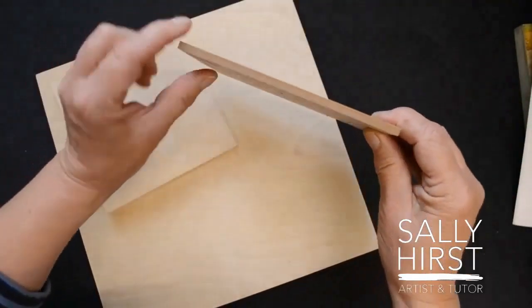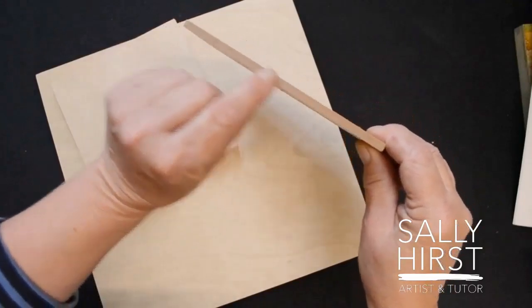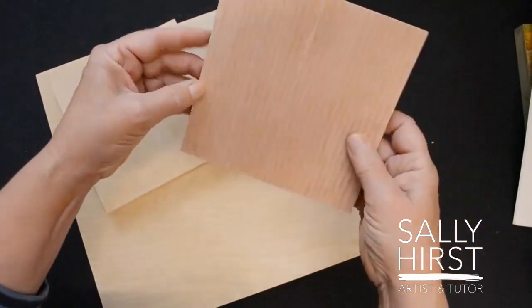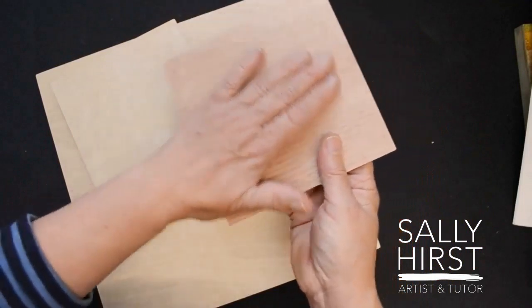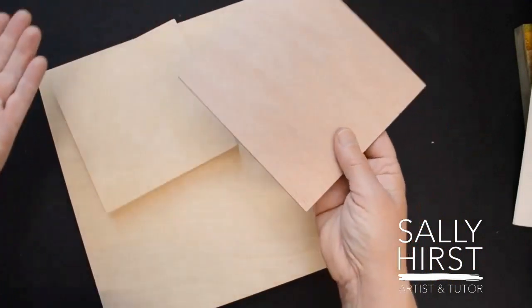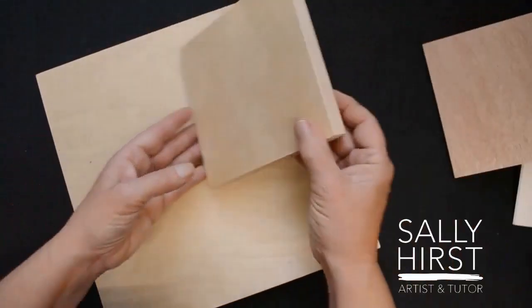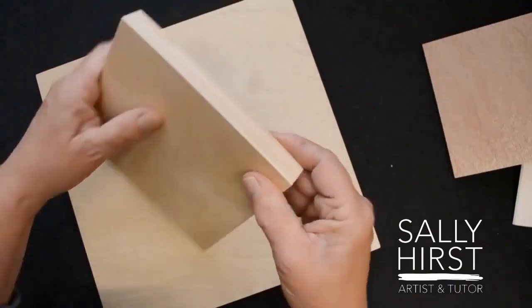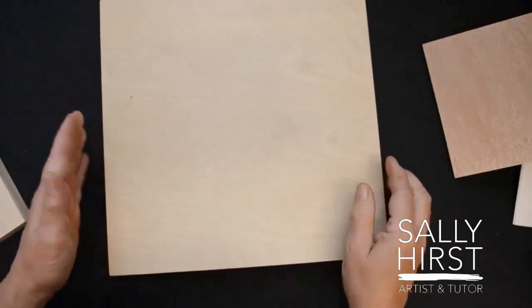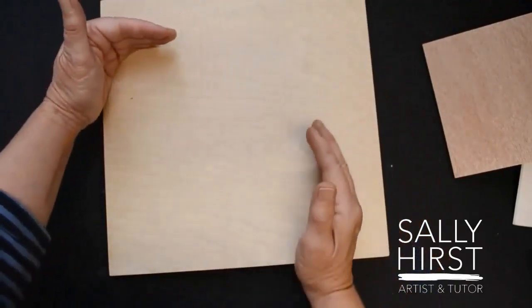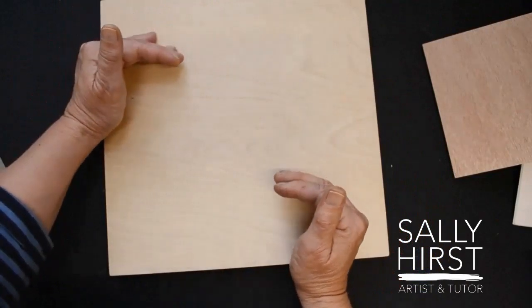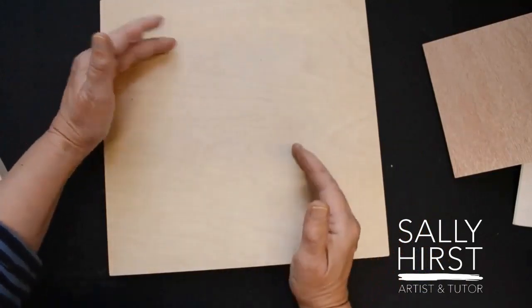So some of these come, this is an MDF here, this is a Jackson's panel. I like these, they're lovely and stable. This is MDF, but it's got a plywood finish. It's just a nice thing. And some of them come cradled. If you're working on anything, I would say, that's bigger than, say, 10 inches square, 25 centimeters for example, we're fine with this size.